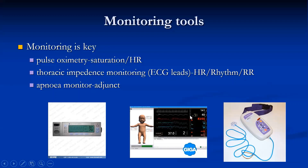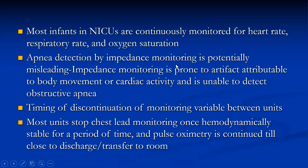Thoracic impedance monitoring with ECG leads gives heart rate, rhythm, and respiratory rate, but it is not very sensitive and movement artifacts are not uncommon. The apnea monitor using a Graseby capsule on the abdominal wall uses breathing movement, but has false positives and is not very helpful. A graded approach is used: both pulse oximeter and ECG leads in the acute phase; saturation monitor only when relatively stable; no monitoring when ready to transfer home. Impedance monitoring is potentially misleading due to movement artifact and may not detect obstructive apnea.